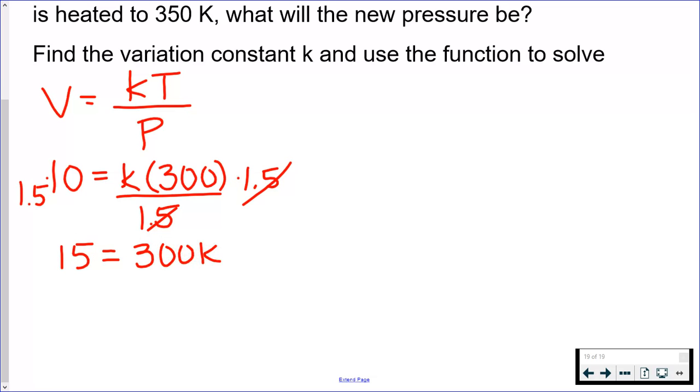So 1.5 times 10 gives me 15. That leaves me with K times 300 on the right-hand side. So to solve for K, I'm going to divide by 300. And 15 over 300 gives me 0.05. That is just K. That's not my final answer.